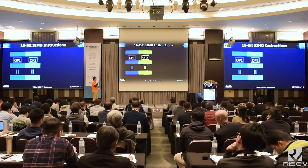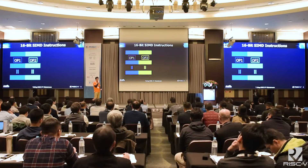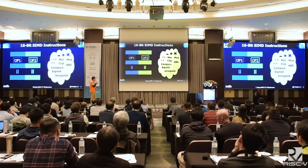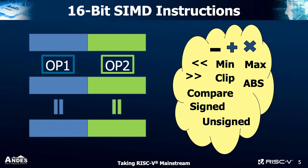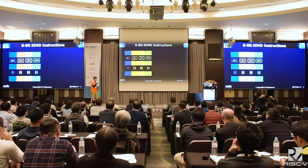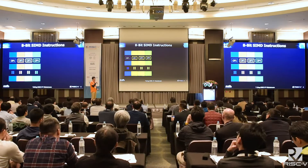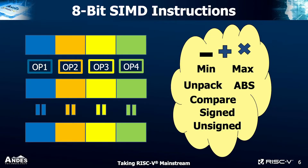This is an illustration for RV32. It will complete two 16-bit operations in one instruction. The supported operations include addition, subtraction, multiplication, min, max, etc. This is an illustration of 8-bit SIMD instructions — it will complete four operations in one instruction. They support similar operations but not exactly the same, depending on the use case.